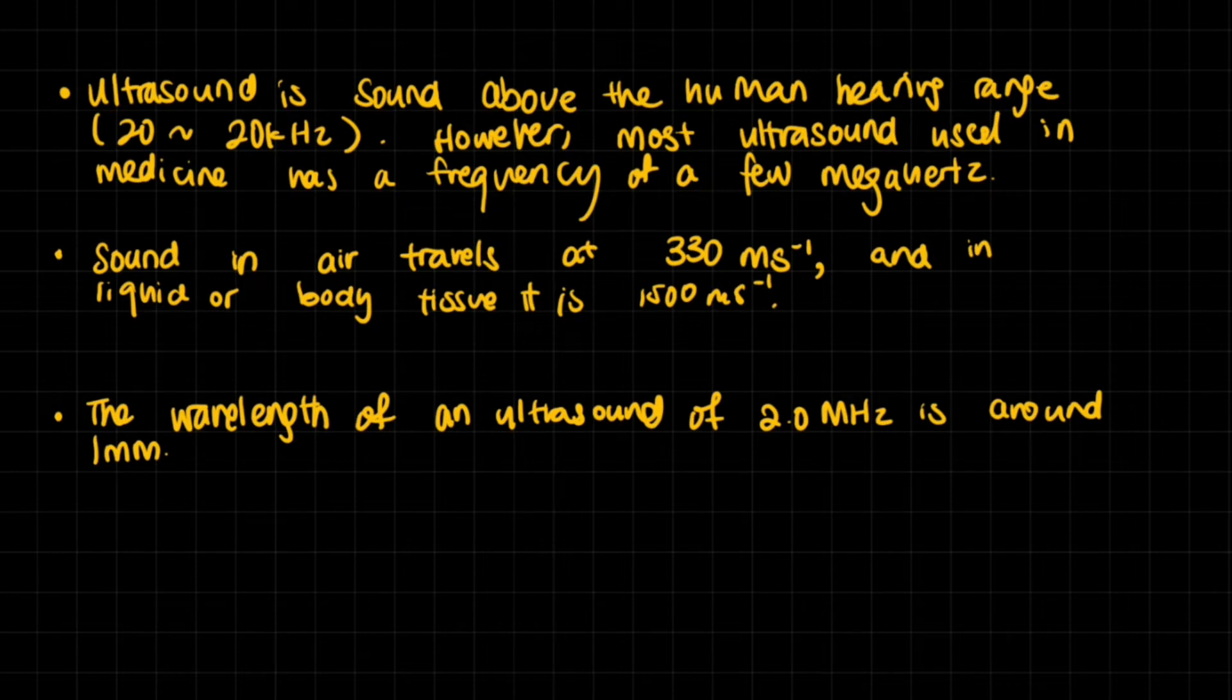In bone, more dense material, that's going to be much higher - a few thousand meters per second. The wavelength of an ultrasound of 2.0 megahertz, which is usually used in medical ultrasound, is around one millimeter. That means you can detect most structures that are one millimeter or bigger because it's not going to miss something that's bigger than this.